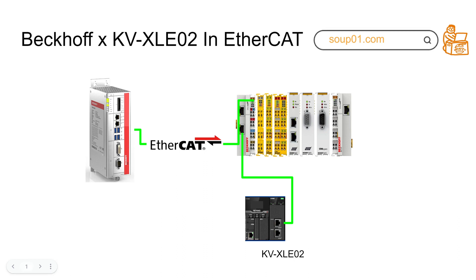Hello everyone, nice to see you again. I'm Chris. In this video I'll show you how to use Beckhoff and TwinCAT to start up an EtherCAT master, and we'll use EK1101 in this tutorial. Then we'll connect with KEYENCE, and the KEYENCE at this time will be operated as an EtherCAT slave. By using the KV-XLE02 modules you can start up different types of industry protocol — in this video I'll show you how to start up as an EtherCAT slave.